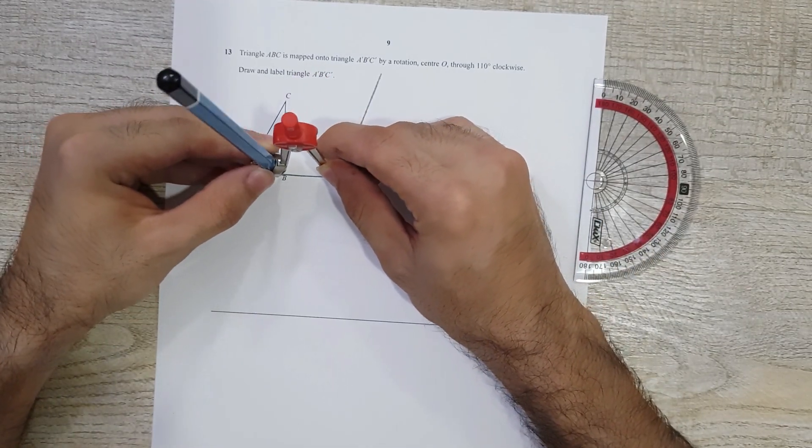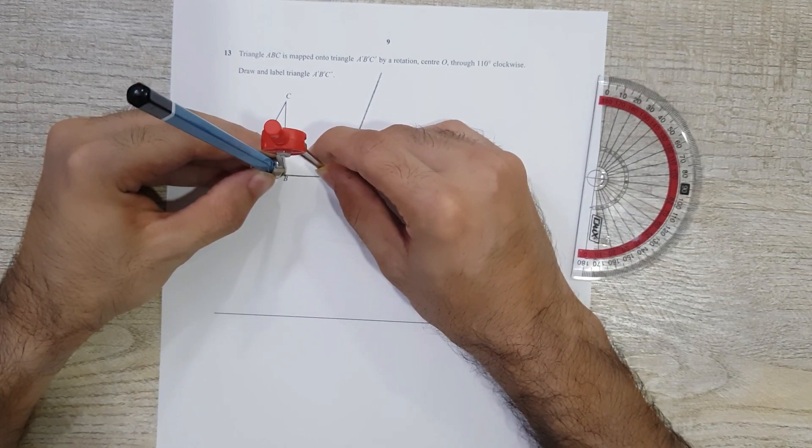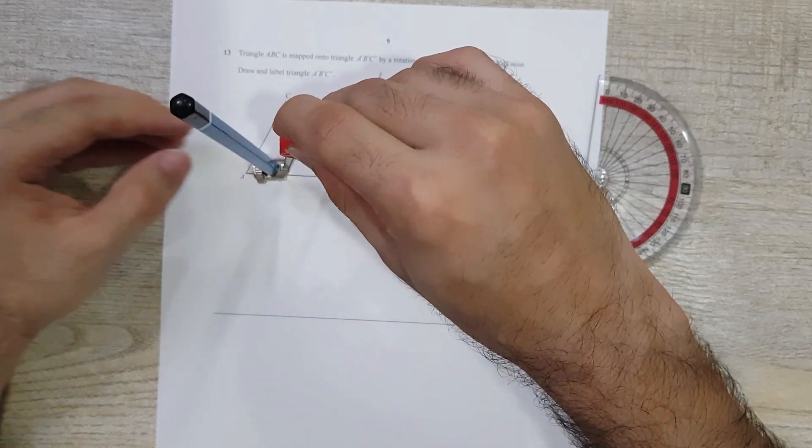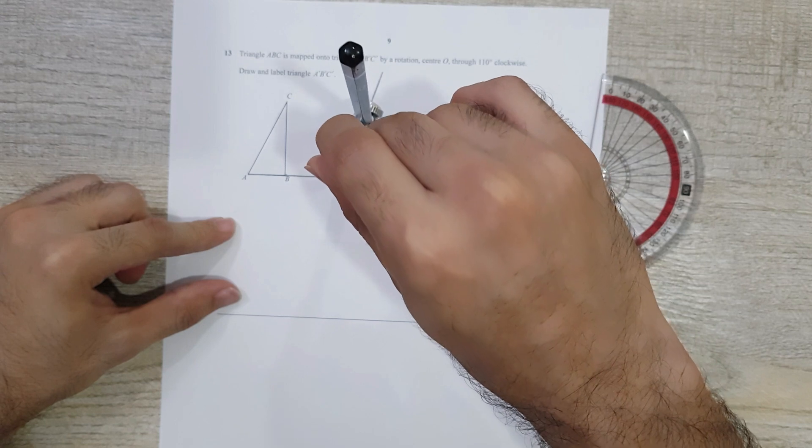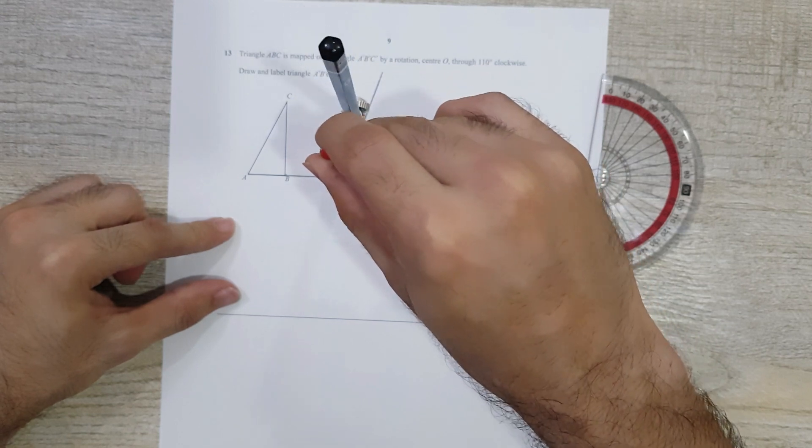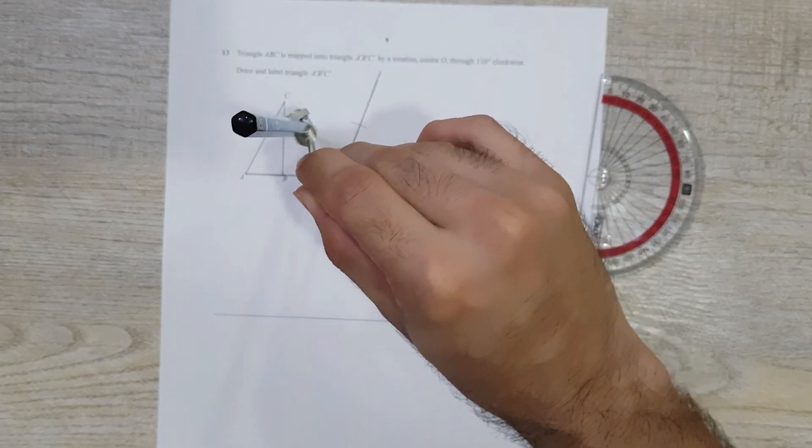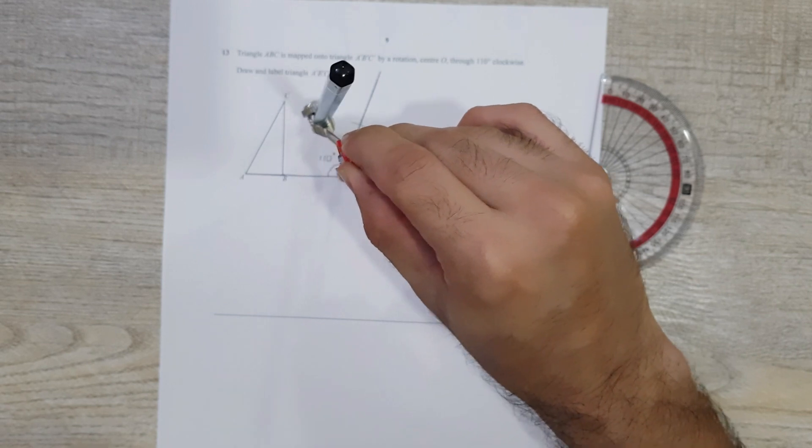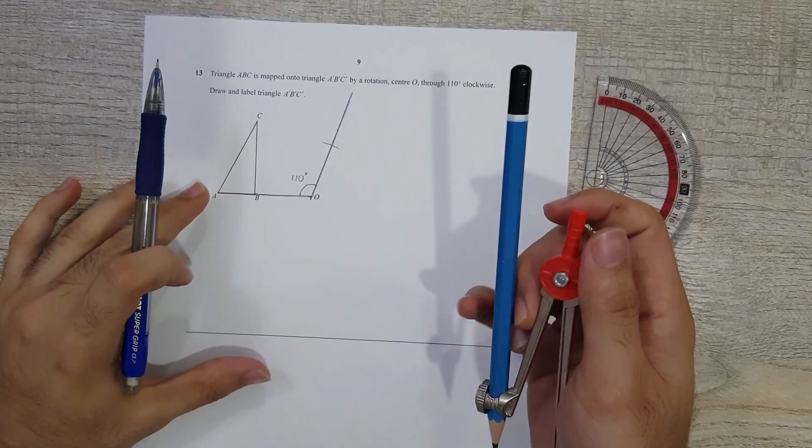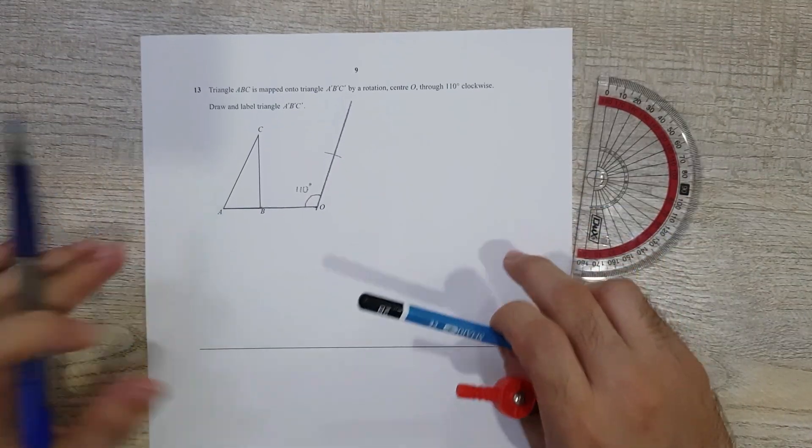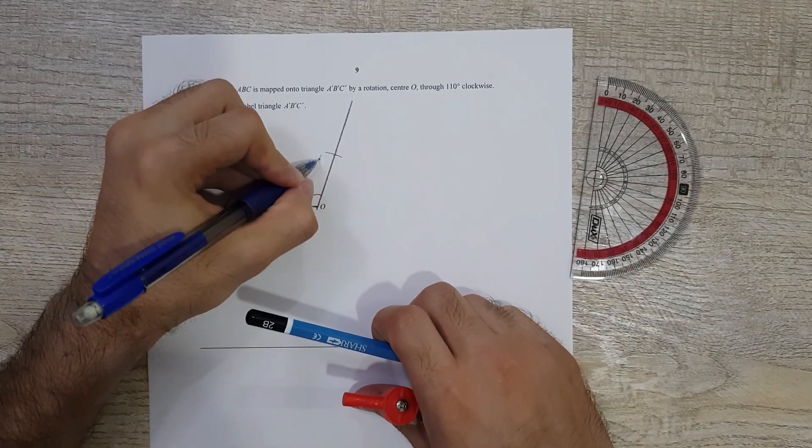I'm going to open my compass from the center till B, and I'm going to make an arc here. This arc is representing the point B. At this point, if you want to write it down, you can. This point is B'.